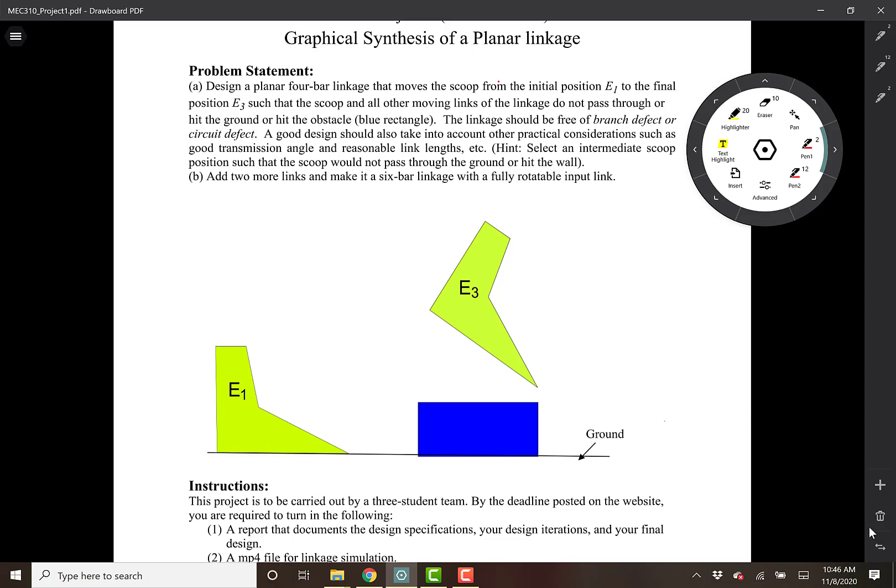In step A, we have to design a 4-bar mechanism to go from E1 to E3. In step B, we have to add a driver diode so that the motion of the 4-bar mechanism is restricted between E1 and E3.